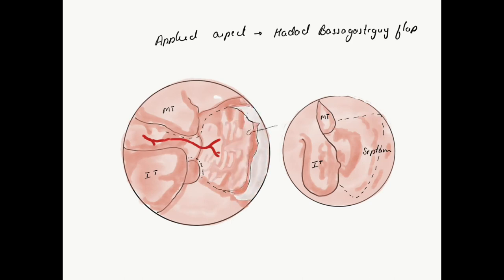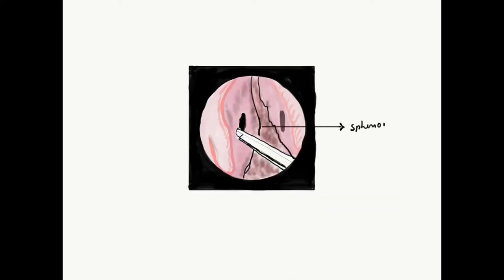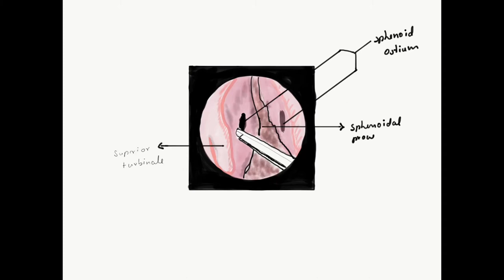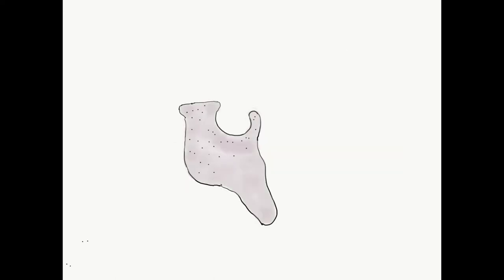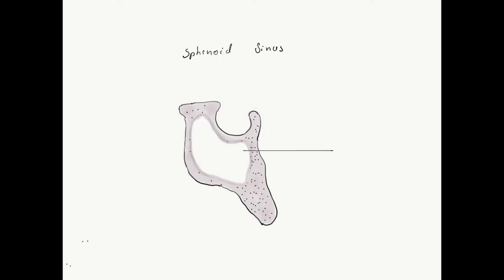A Hadad flap is taken at this stage of the surgery. The septum is removed in the posterior part to expose the sphenoidal process, and the two ostia can be seen. The anterior wall of the sphenoid sinus is drilled to enter into the sphenoid sinus. The sphenoid sinus is an important structure that forms relations with important neurovascular structures around it. It shows pneumatization posteriorly, and a well-pneumatized sphenoid sinus is called the Sella type, which can extend up to the clivus.